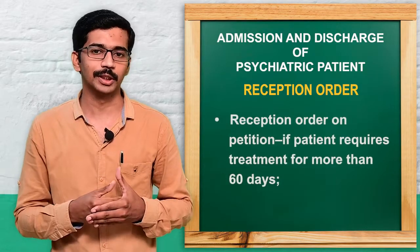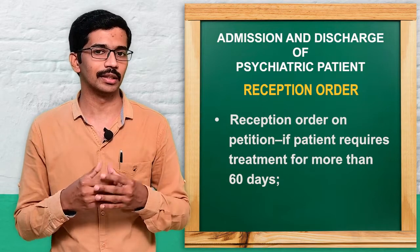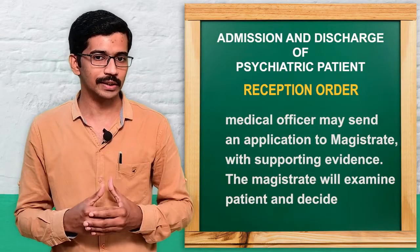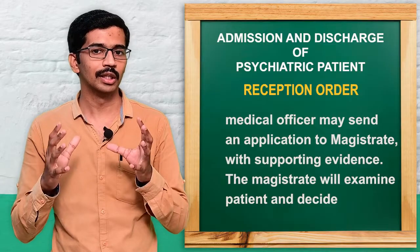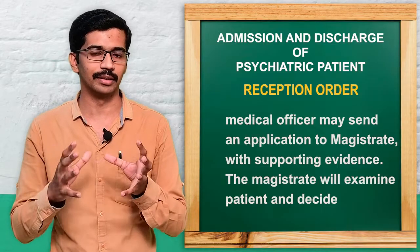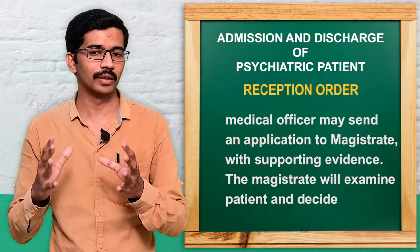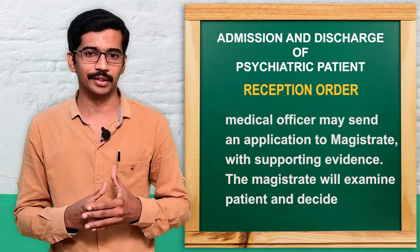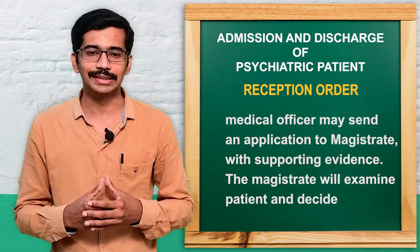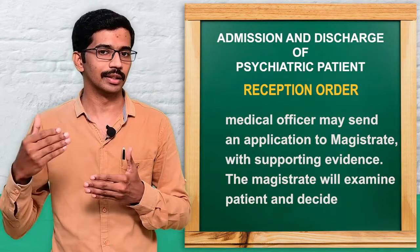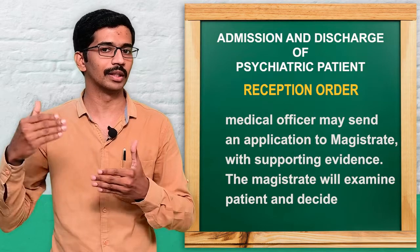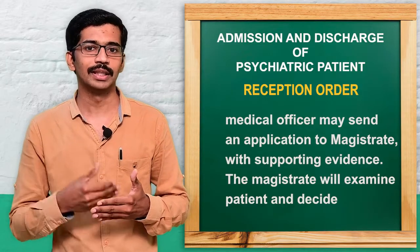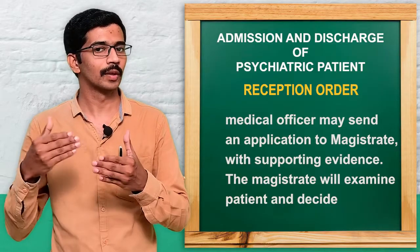In reception order on petition, if a patient admitted in the hospital requires treatment for more than 60 days, the medical officer can give an application to the magistrate in the local jurisdiction. The magistrate will examine the patient or verify the documents and give an order confirming that the person needs more than 60 days of treatment.